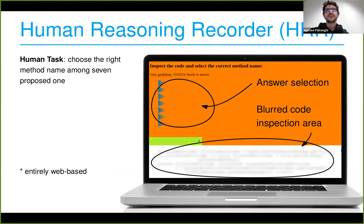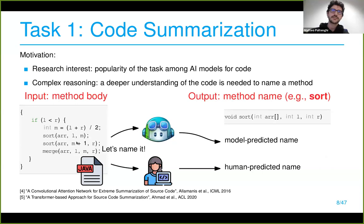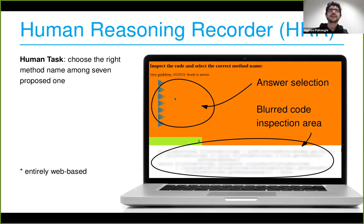To record human attention, we used a web UI called the Human Reasoning Recorder. For the model, it's trained on the task and naturally outputs method name tokens. For the human, we designed a comparable task. We didn't want free text because it would be difficult to measure performance, so we gave a confined task: the human sees blurred code and by moving the mouse can reveal tokens in the vicinity of the cursor, then must pick one of seven listed alternatives.